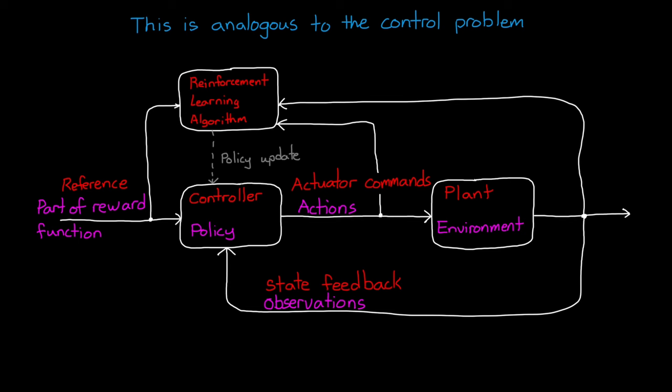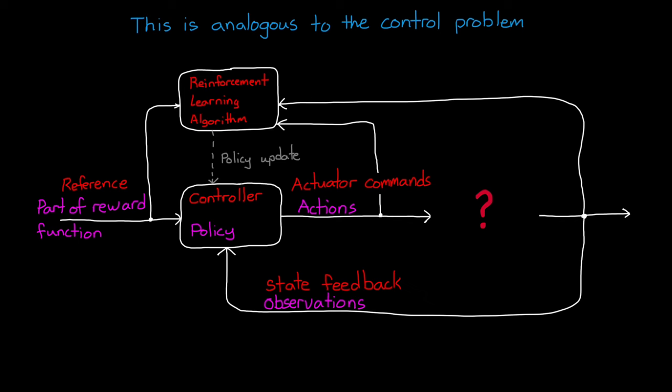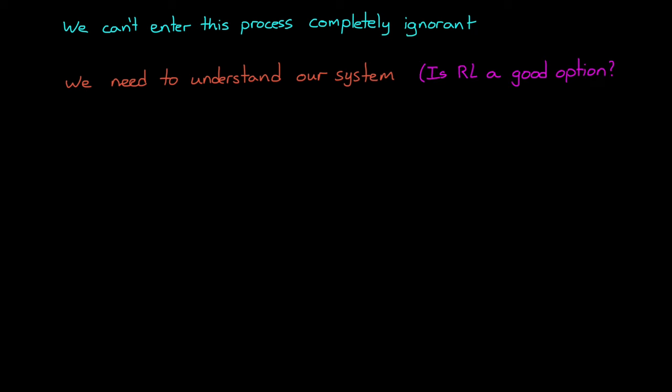In this way, we can essentially design a controller, which is a policy, without knowing anything about the system itself, and without having to solve any of the traditional control problems. We just let the computer learn the right parameters on its own through a process that you can think of as fancy trial and error. Now, even with the learning algorithm doing most of the work for us, we can't enter this process completely ignorant. We have to know several things before we start. And the first is that we need to understand our system that we're trying to control and determine whether it's better to solve the problem with traditional control techniques or with reinforcement learning.